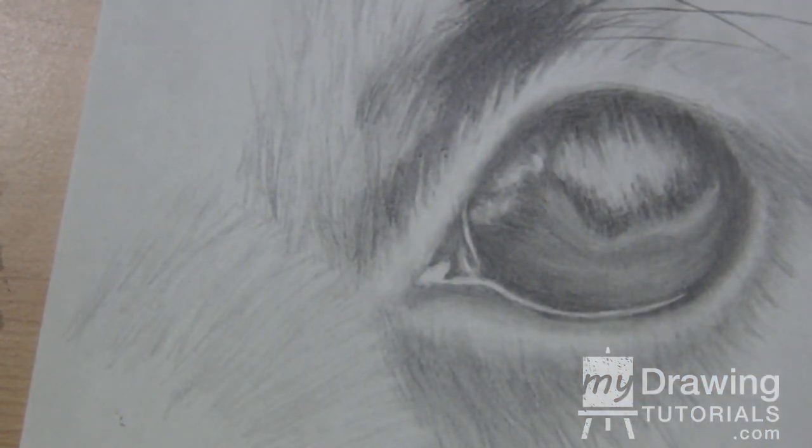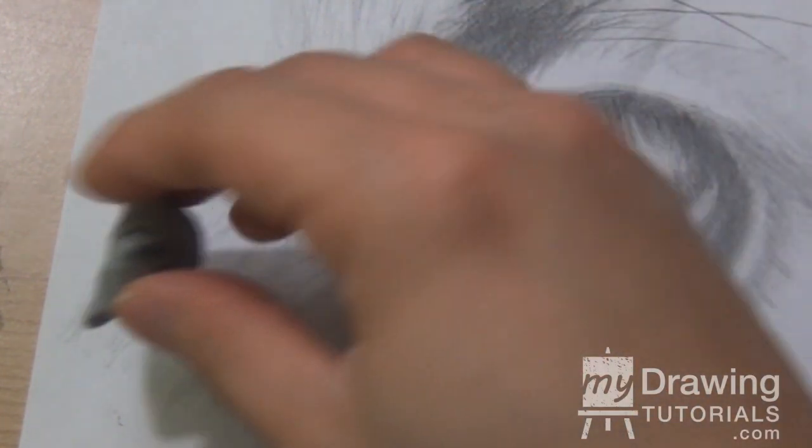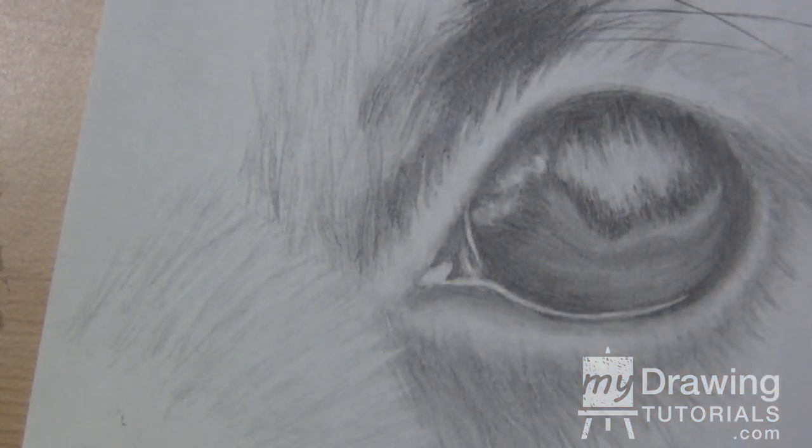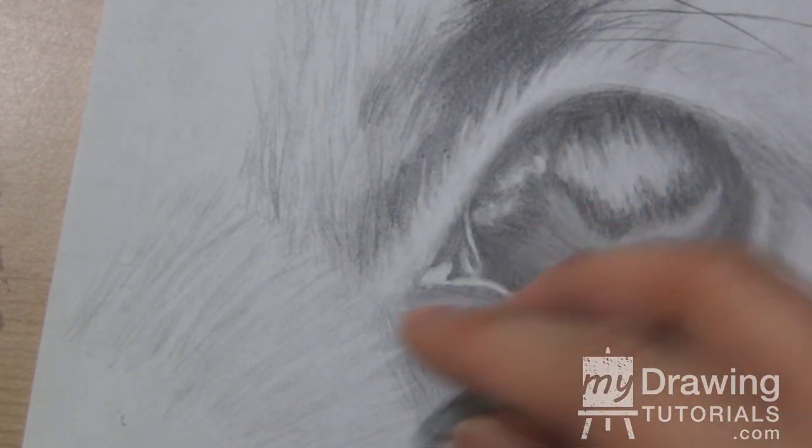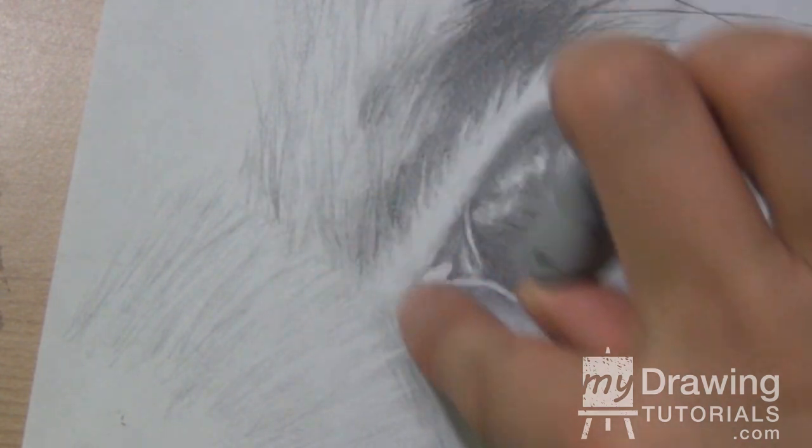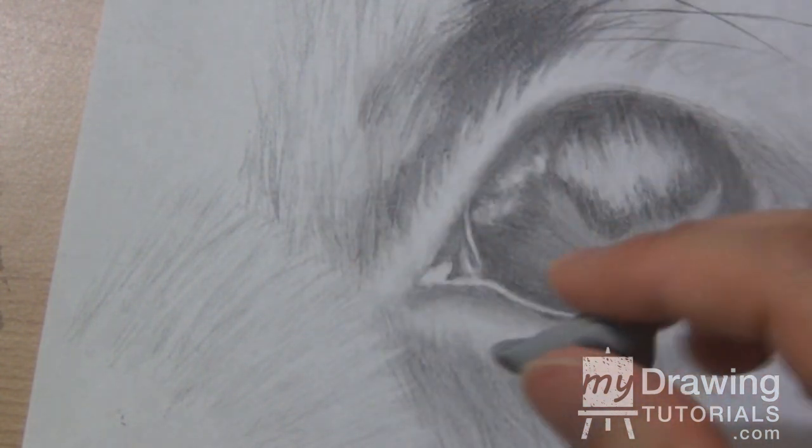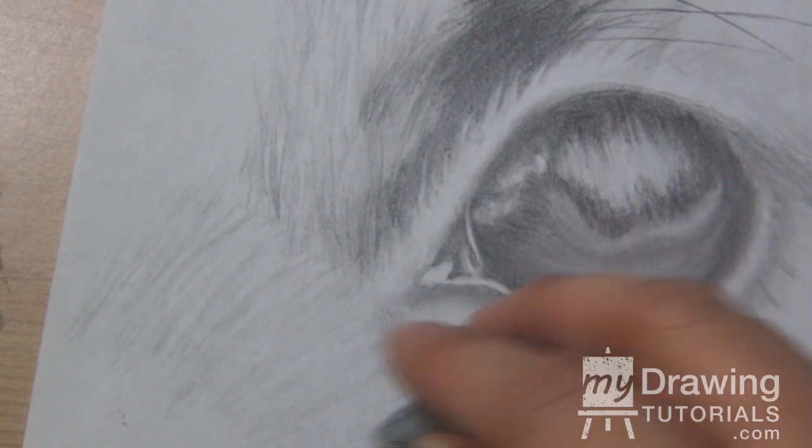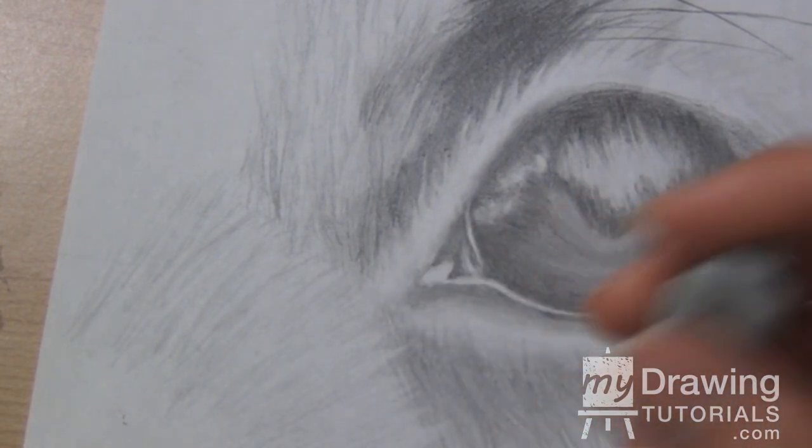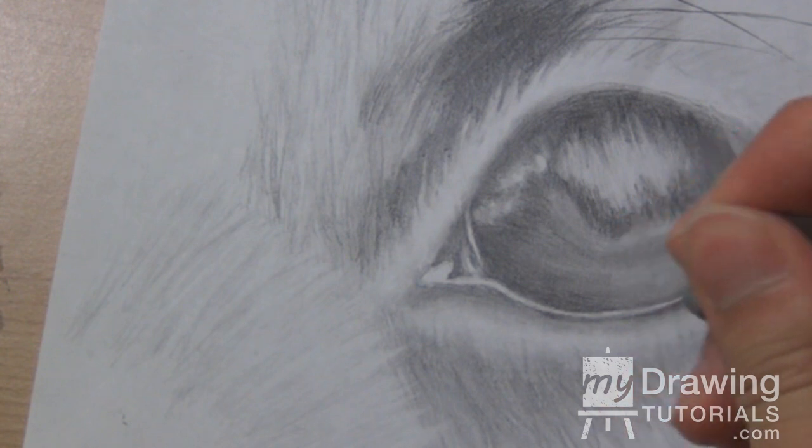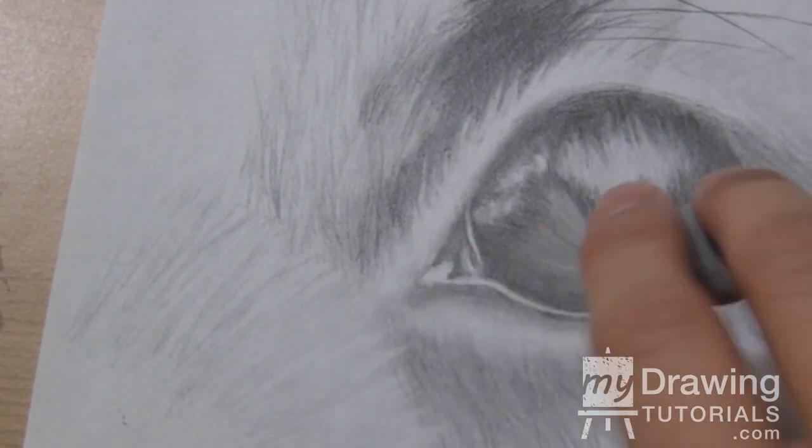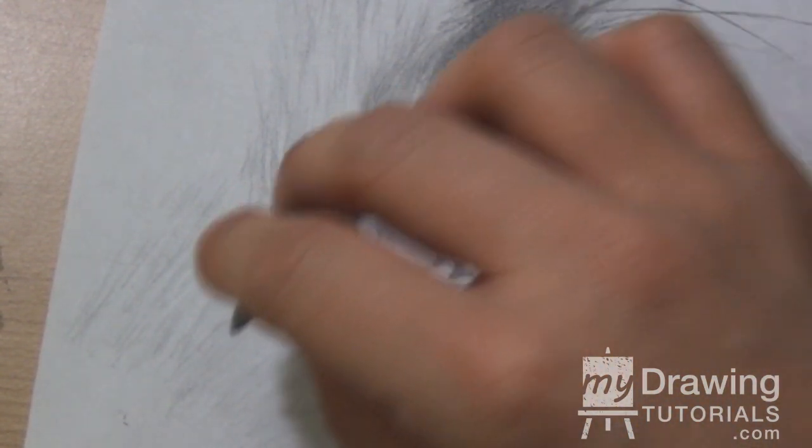So now we'll take our kneaded eraser again and put in the highlights. And for this one I want to really make sure that my highlights go into this area here just a tad bit. So we want to go across the border and have the highlight goes as if the furs are overlapping. We want to create that effect.